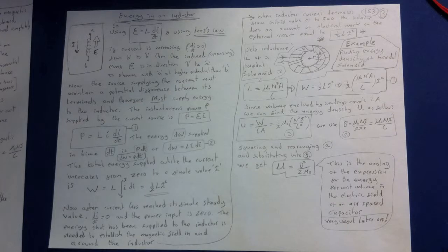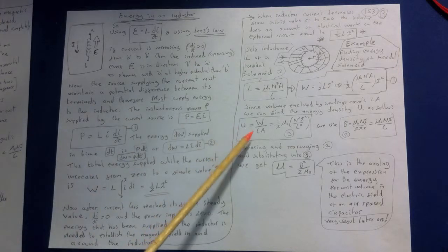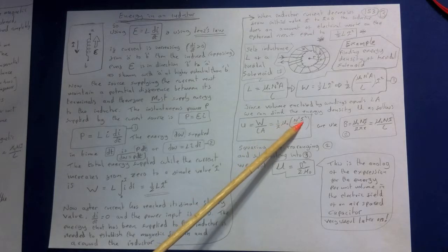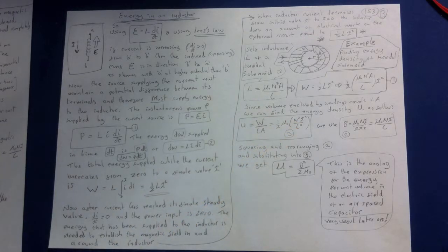To get the energy density capital U, energy per unit volume, we think of this energy W as localised in the volume enclosed by the windings equal to L times A. Therefore, the energy density capital U is W over LA here. We can then write half Ui N squared I squared over L squared here. Now using the equation for magnetic field in a toroid we saw in a previous lecture.